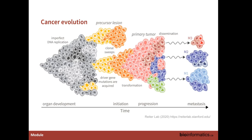Cancer evolution is the reason why we're interested in heterogeneity. By being able to look at heterogeneity, we're able to reconstruct and understand the evolutionary patterns that led to it. Then, potentially, with a complete understanding of that heterogeneity, we'd be able to predict what will happen clinically to a patient in whom we've observed that cellular heterogeneity.